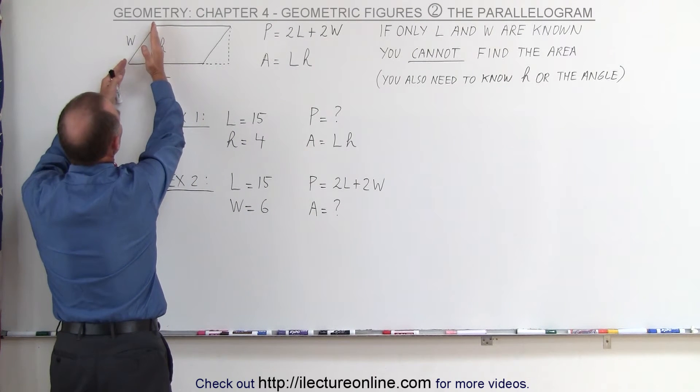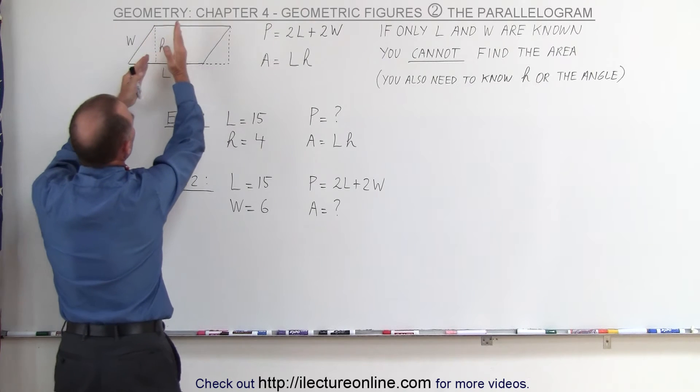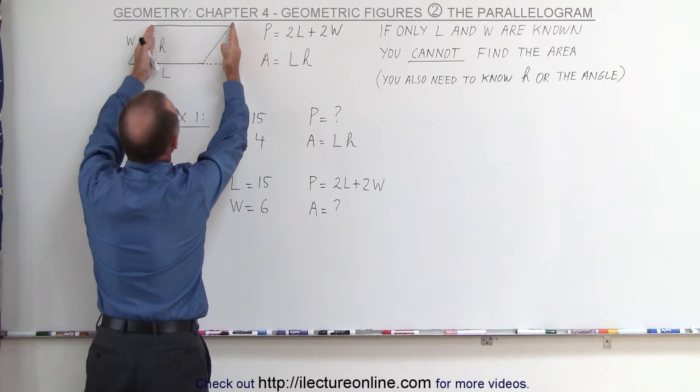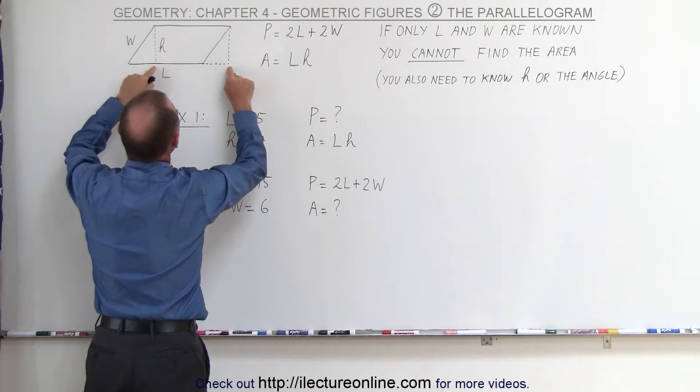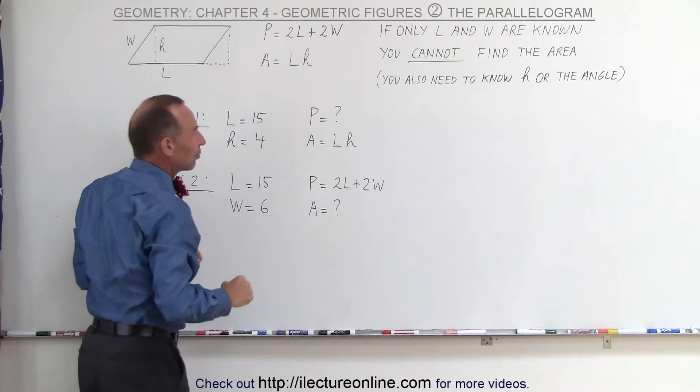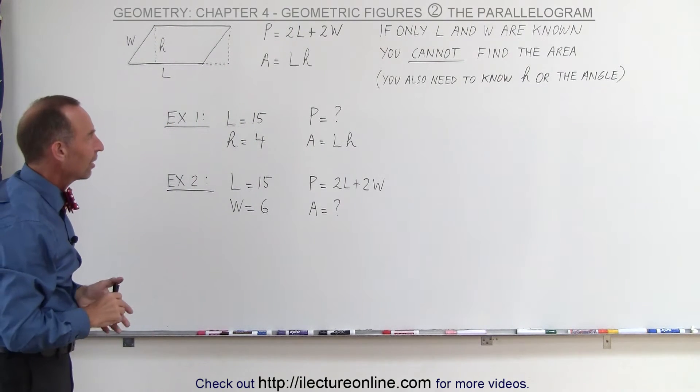Notice why the area would be the length times the height. If we chop out this little piece of the parallelogram and we move it over here, we then have ourselves a rectangle, where this will be the length and this will be the height. So you can see that does make a lot of sense.